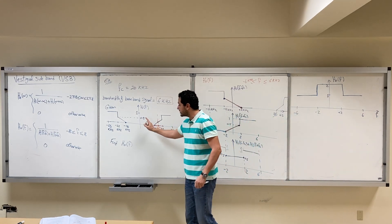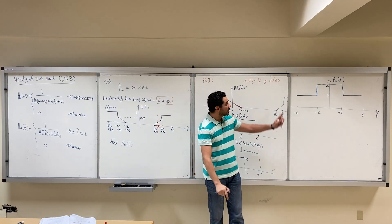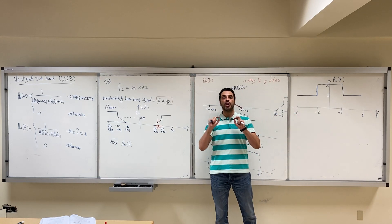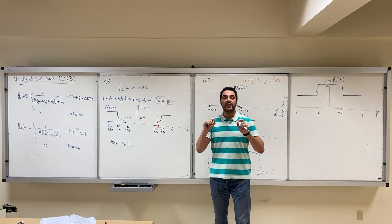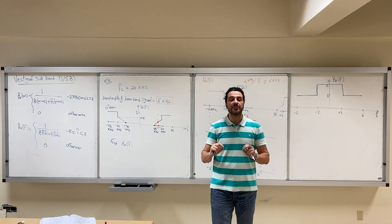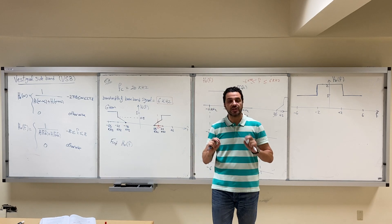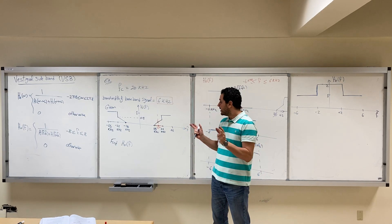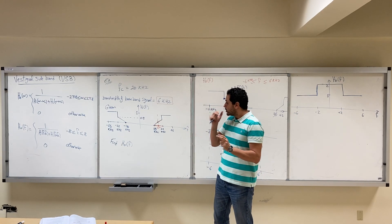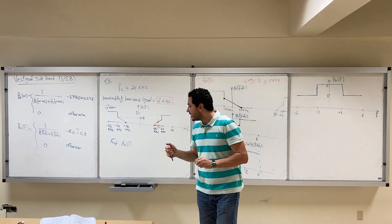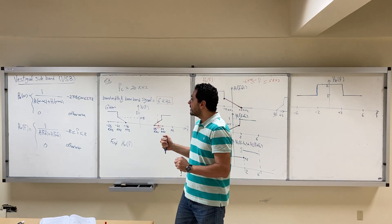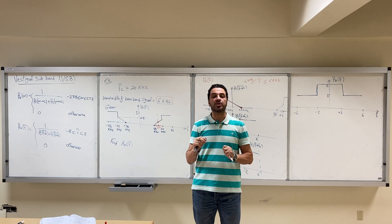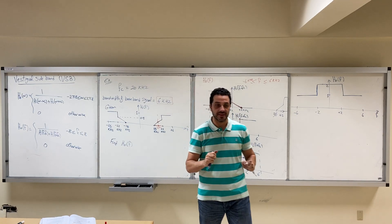We obtained H_node(f), which is the equalizer filter that will equalize the effect of the transmitter filter. If you use that filter at the transmitter, you have to use this filter at the receiver in order to reconstruct your message m(t) exactly as the original message, otherwise it will be distorted. I hope this example was useful — see you in the next video with some quick discussion about vestigial sideband.